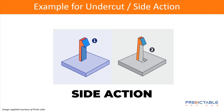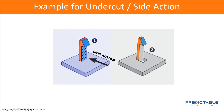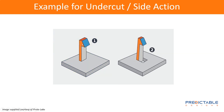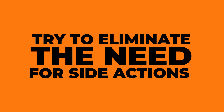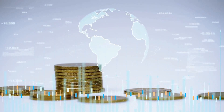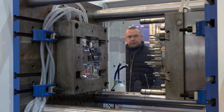One solution to undercuts is what's called a side action. Instead of just having the top piece and bottom piece of the mold, side actions are pieces that come in from the sides. The side action fills in the gap, you inject the plastic, and then before you can open the mold you first remove the side action so the part can be released. The problem with side actions is they add a lot of cost and complexity to the mold. It's always to your advantage to eliminate the need for side actions. Molds are already expensive — costing thousands or tens of thousands of dollars — so any savings is substantial.